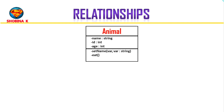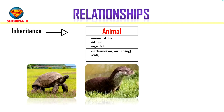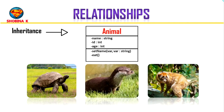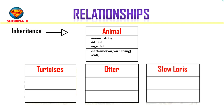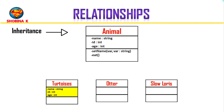The next thing we'll cover is the different relationships that exist between classes. The first type is inheritance. Continuing with the zoo example — let's say in our zoo system we have animals like tortoises, otters, and slow lorises, and we want to distinguish them as their own classes. So we make three new classes for tortoise, otter, and slow loris. Instead of duplicating attributes for name and age, we can make these classes subclasses of the animal class by drawing an open arrow like this.